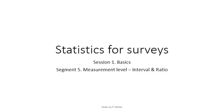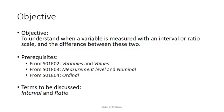Welcome to Statistics for Surveys Session 1 Basics, Segment 5, Measurement Level, Interval and Ratio. The objective of this segment is to understand the last two types of measurement levels, interval and ratio. We've already discussed in previous segments the terms variables and values, measurement level and nominal, and ordinal. The only two new terms this segment will be interval and ratio.